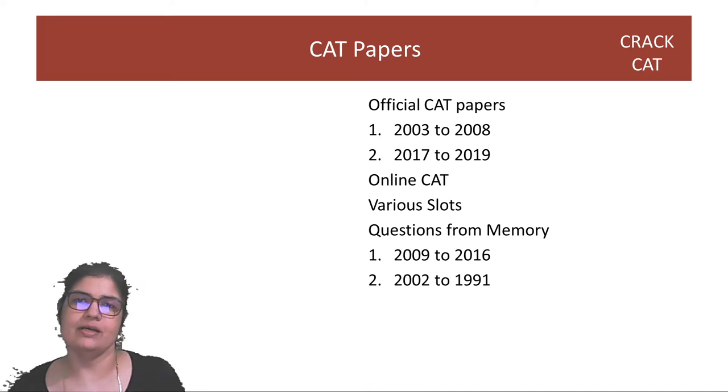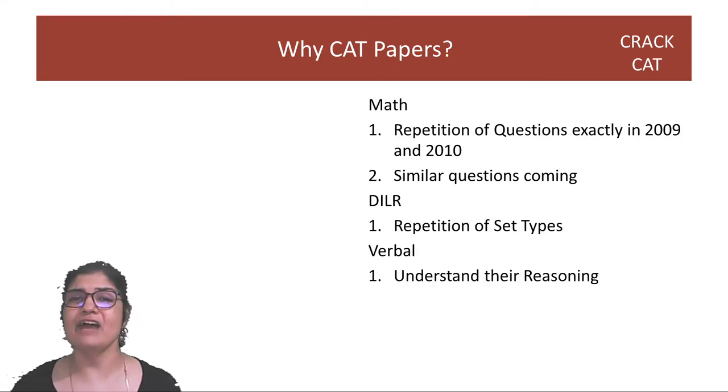We have official CAT papers starting from 2003 to 2008, when the CAT became online with various slots. Then we have 2017 to 2019. For quite a few years till 2016, you only have questions from memory and we have done some of those questions. We will mostly concern ourselves in the beginning with 2008 till 2004, and then as we approach the CAT we will move towards 2017 to 2019.